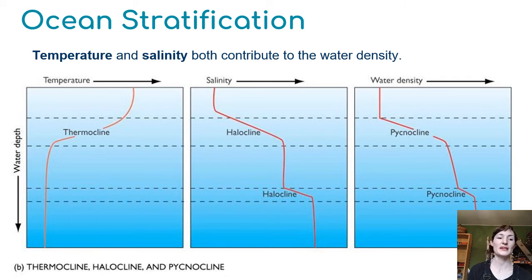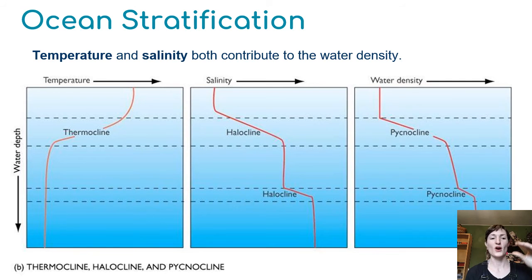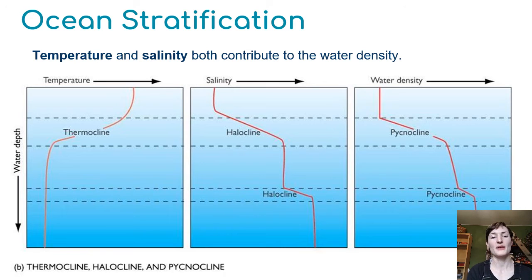The pycnocline has two major contributions: a temperature contribution and a salinity contribution. Both happen in the same region of the water column. The big change in temperature is your thermocline, and the big change in salinity is your halocline. Put those together and that's the pycnocline.